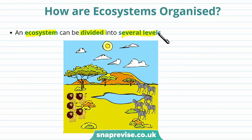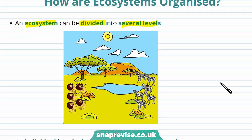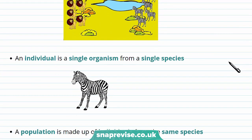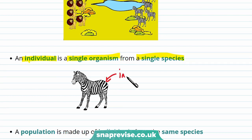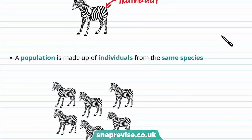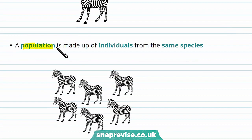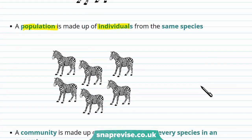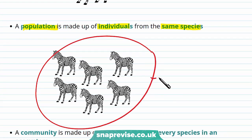We can divide an ecosystem into several different levels. The simplest and smallest level is an individual — this is a single organism from a single species. For example, this single zebra would be an individual. These individuals make up the next level: a population, which is made up of individuals from the same species. For example, this group of zebras together would be a population.